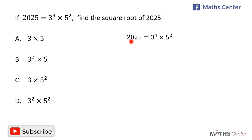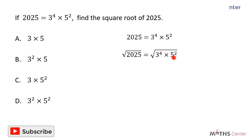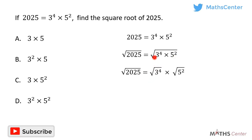Since 2025 is equal to 3 exponent 4 times 5 exponent 2, the square root of 2025 is also equal to the square root of 3 exponent 4 times 5 exponent 2. From sets, this can also be written as the square root of 3 exponent 4, times the square root of 5 exponent 2.